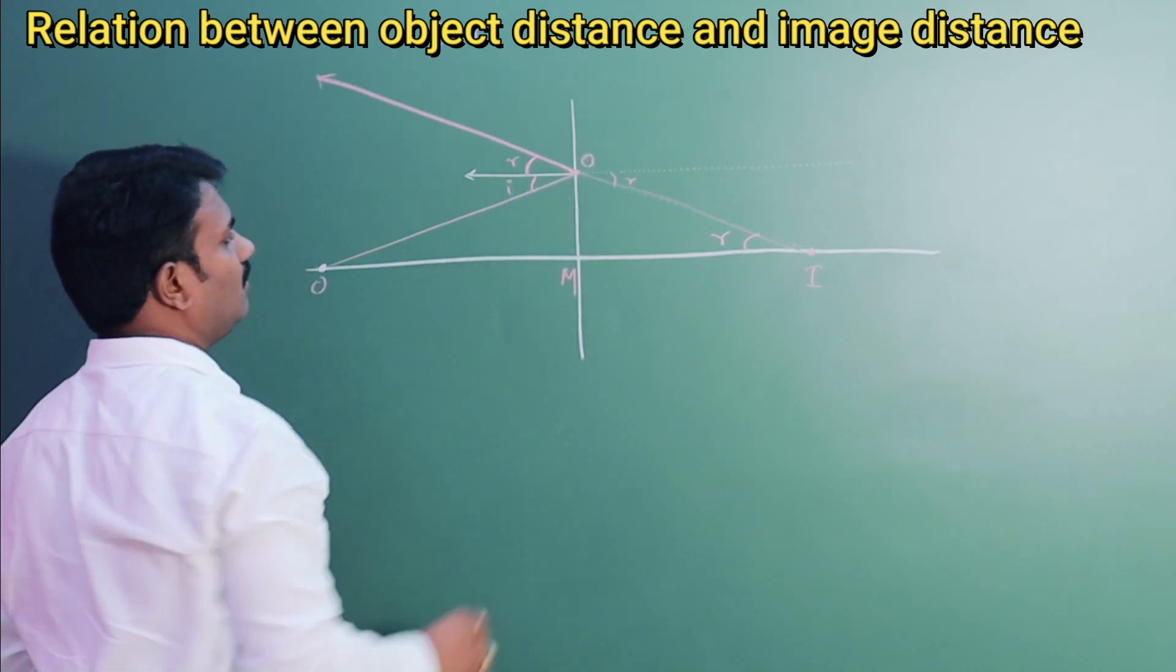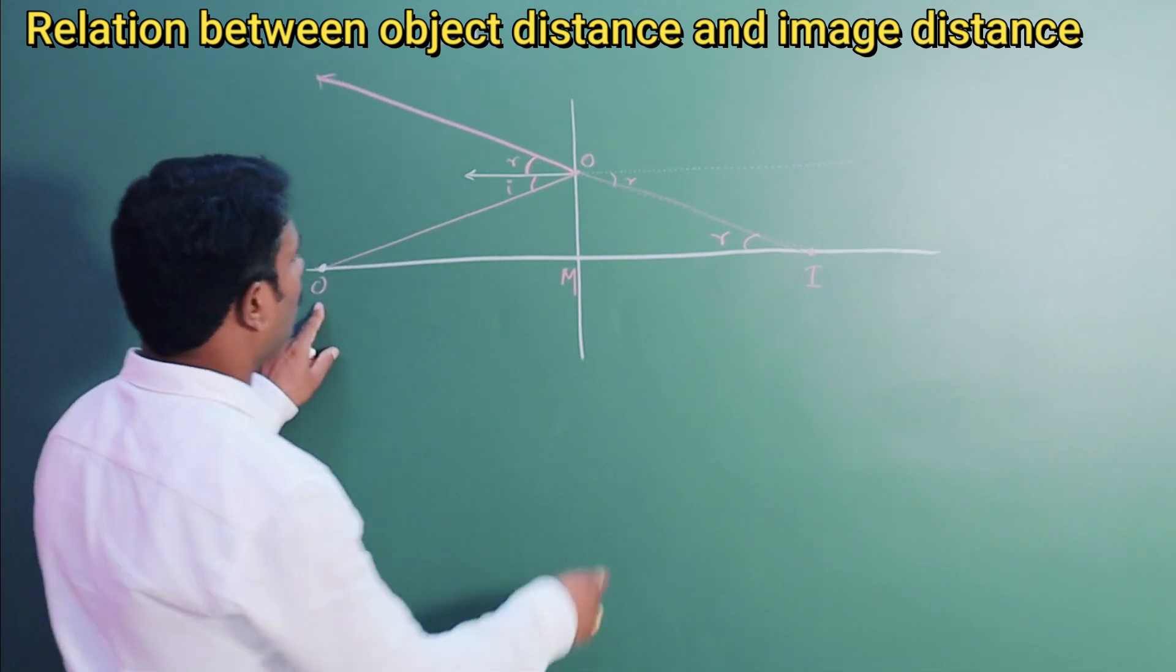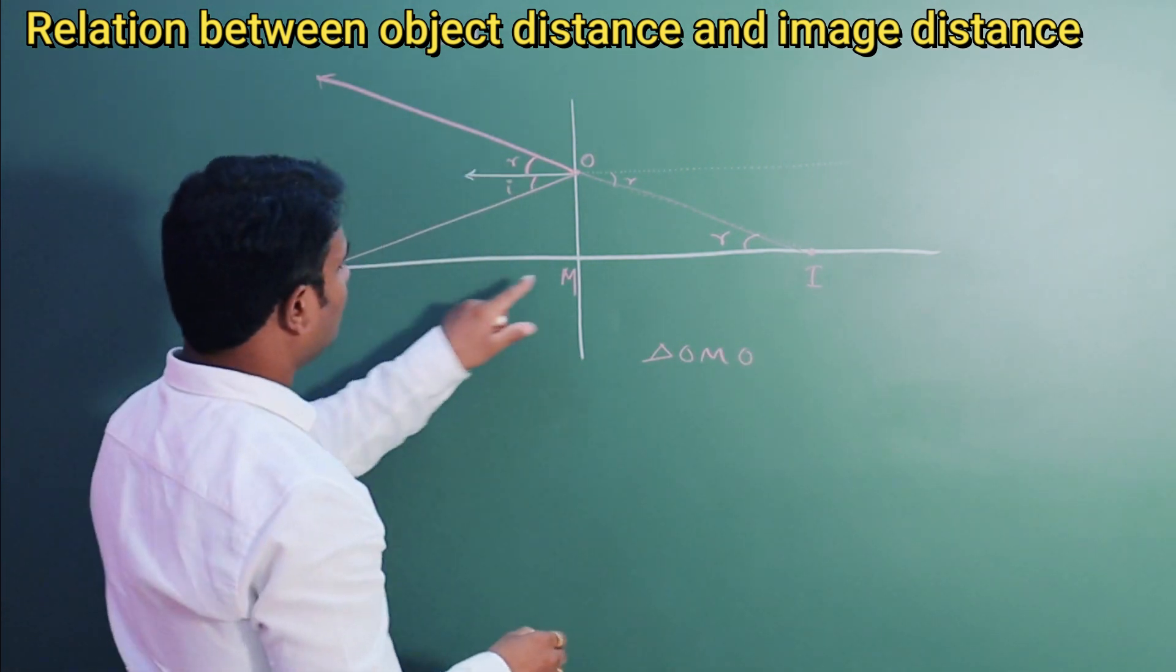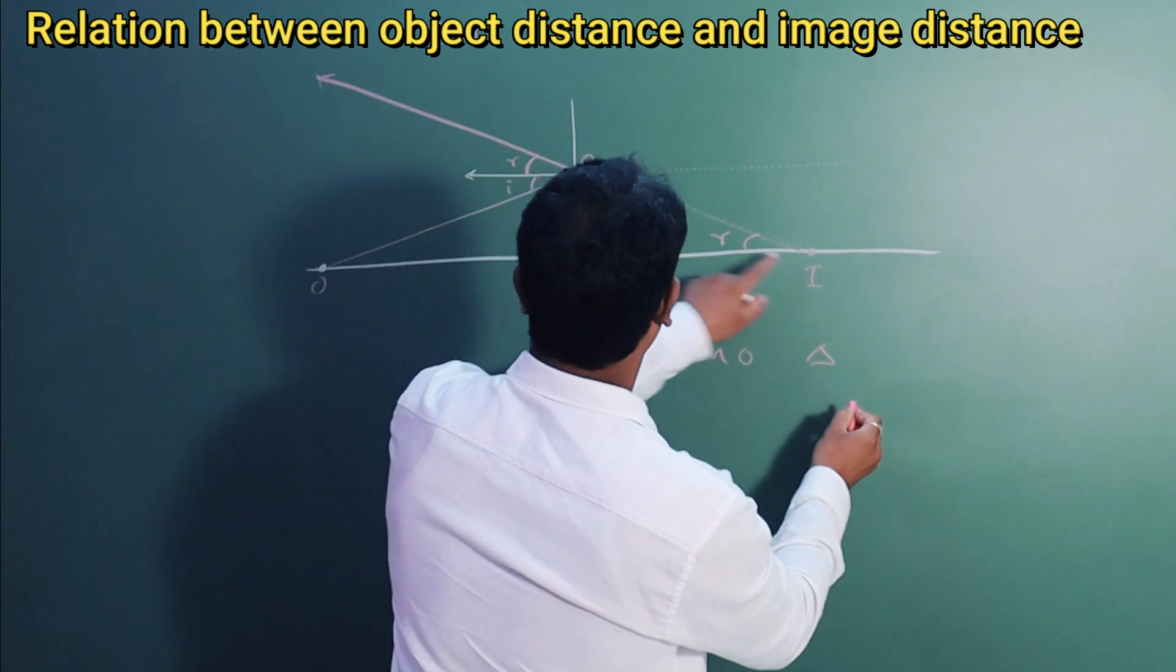Say this is something O. Now here we have two triangles. One is O, M, O. Another one is triangle I, M, O.